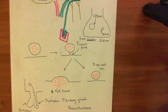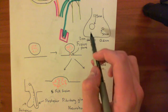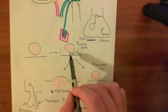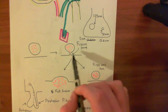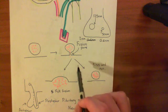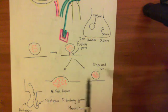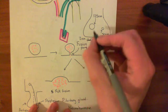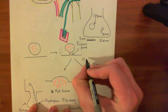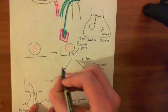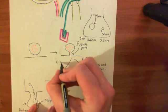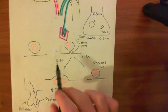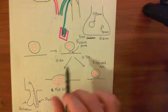We can also measure the duration for which these large and small synaptic vesicles are actually in the fusion pore state — how long before they go to either the collapsed or full fusion state. For the small synaptic vesicles, the pore duration is around 0.3 seconds, whereas for the large synaptic vesicles it's around 0.6 seconds.